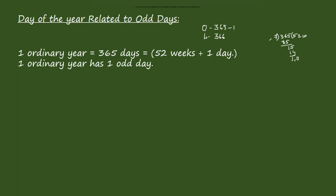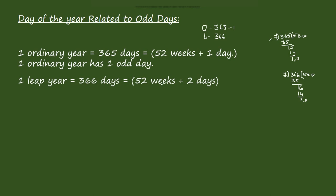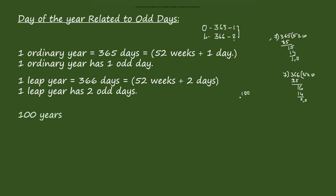For a leap year, we have 366 days. Dividing 366 by 7 gives 52 weeks and 2 odd days. So one leap year has two odd days. Remember: one ordinary year has one odd day, and one leap year has two odd days.